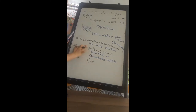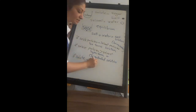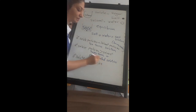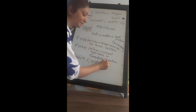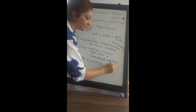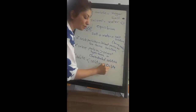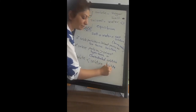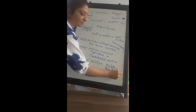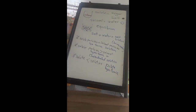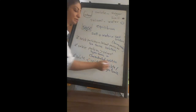If solute particles are less than solvent particles, the type of solution we have is a dilute solution, also called a hypotonic solution.